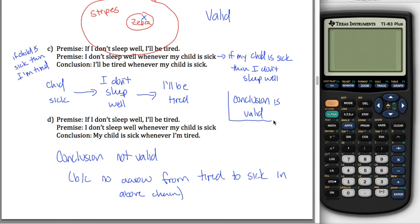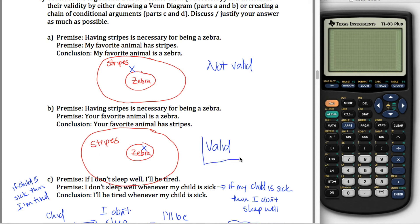So really the answers here are valid, not valid, and then valid and not valid up here. And this is kind of the work justifying that.